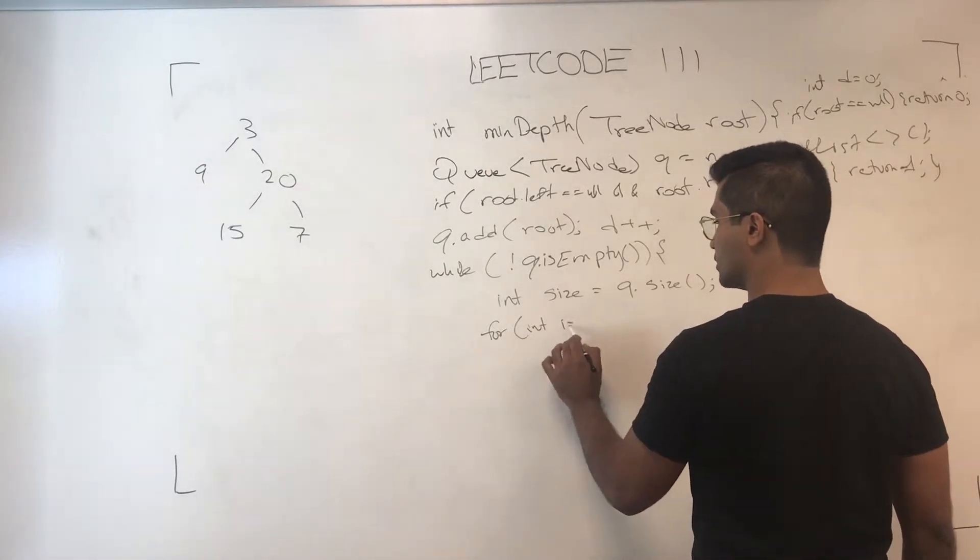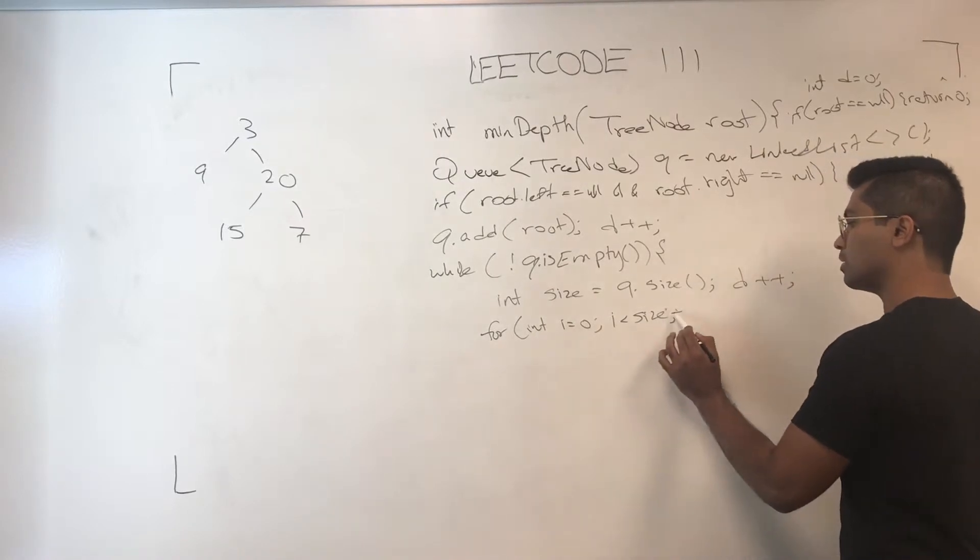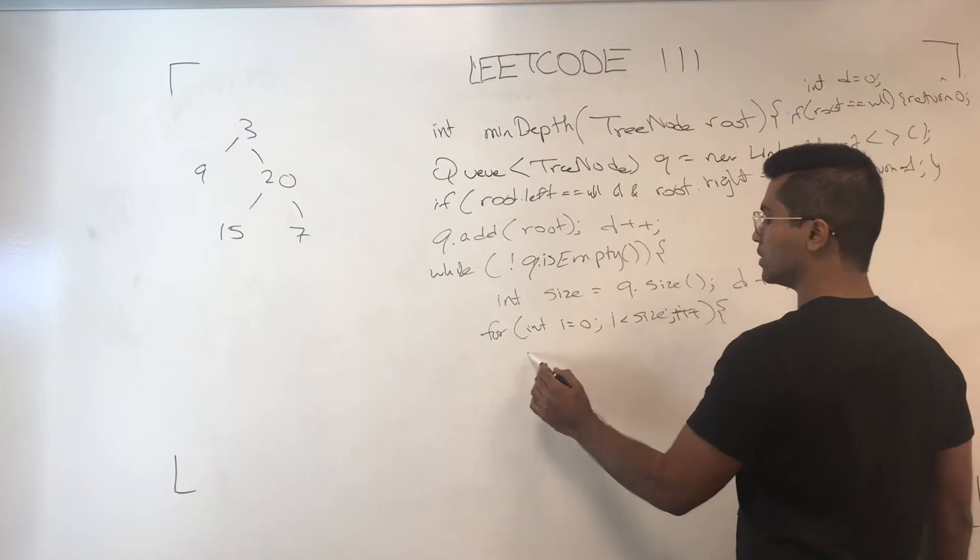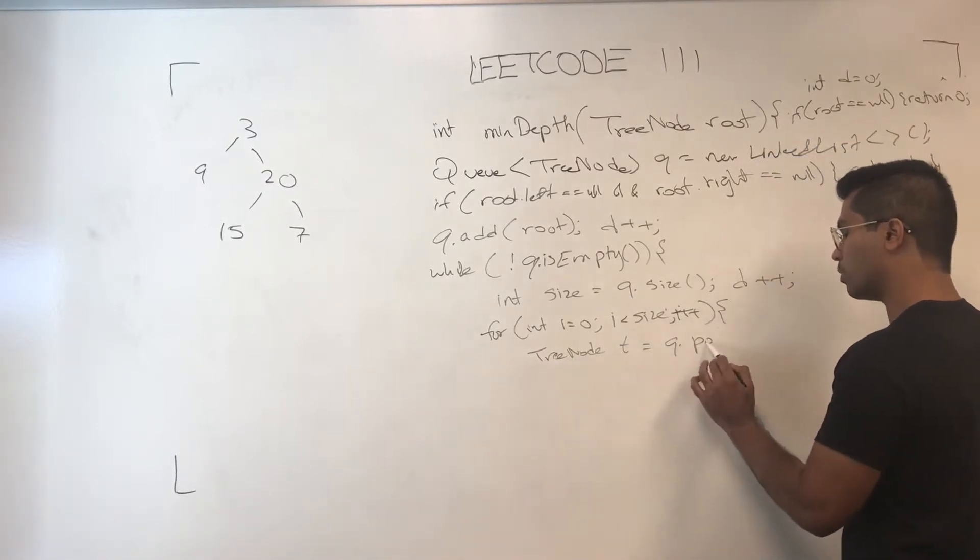For int i equals 0, i is less than size, i plus plus, tree node t for temp is Q dot pull.